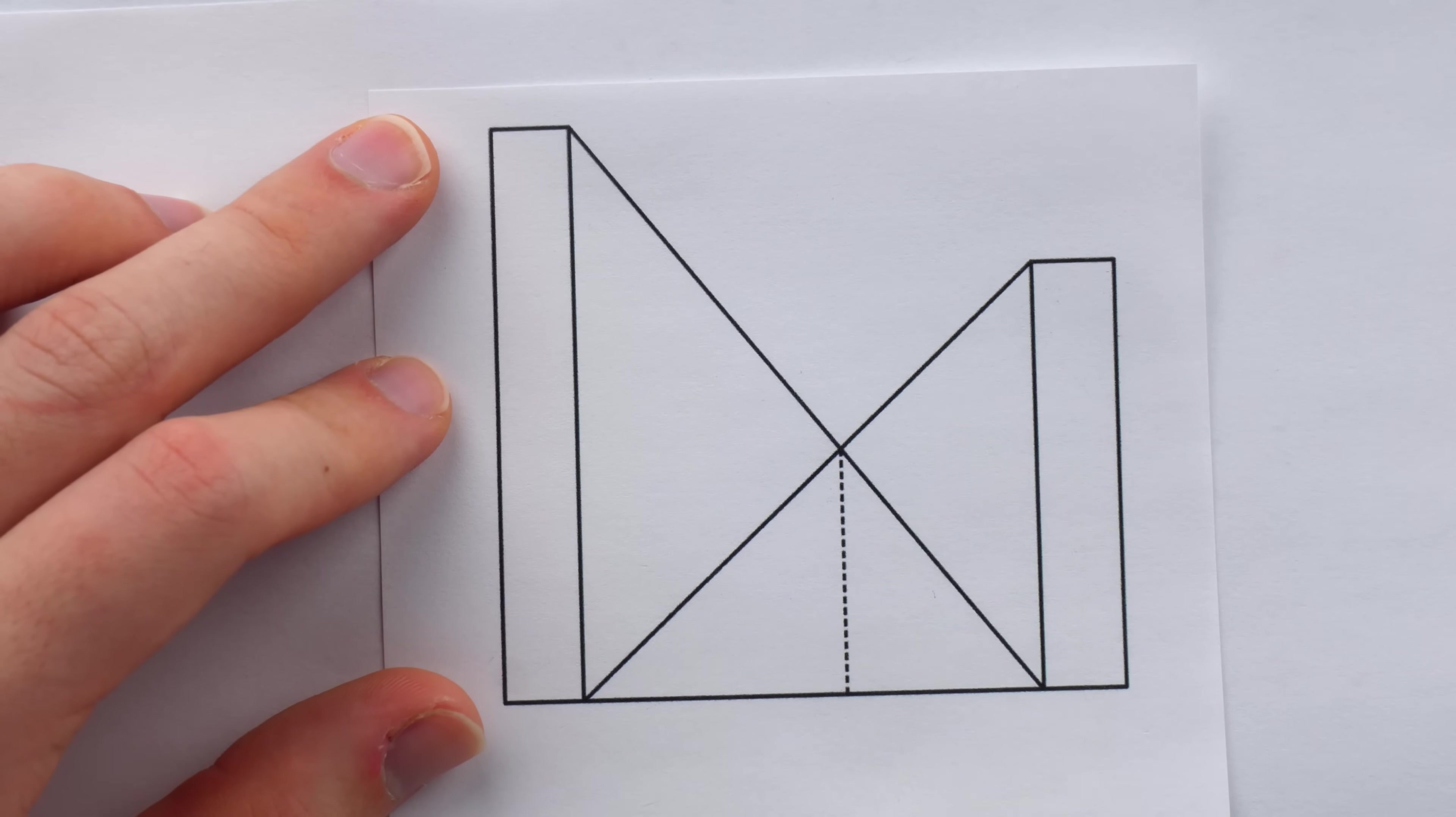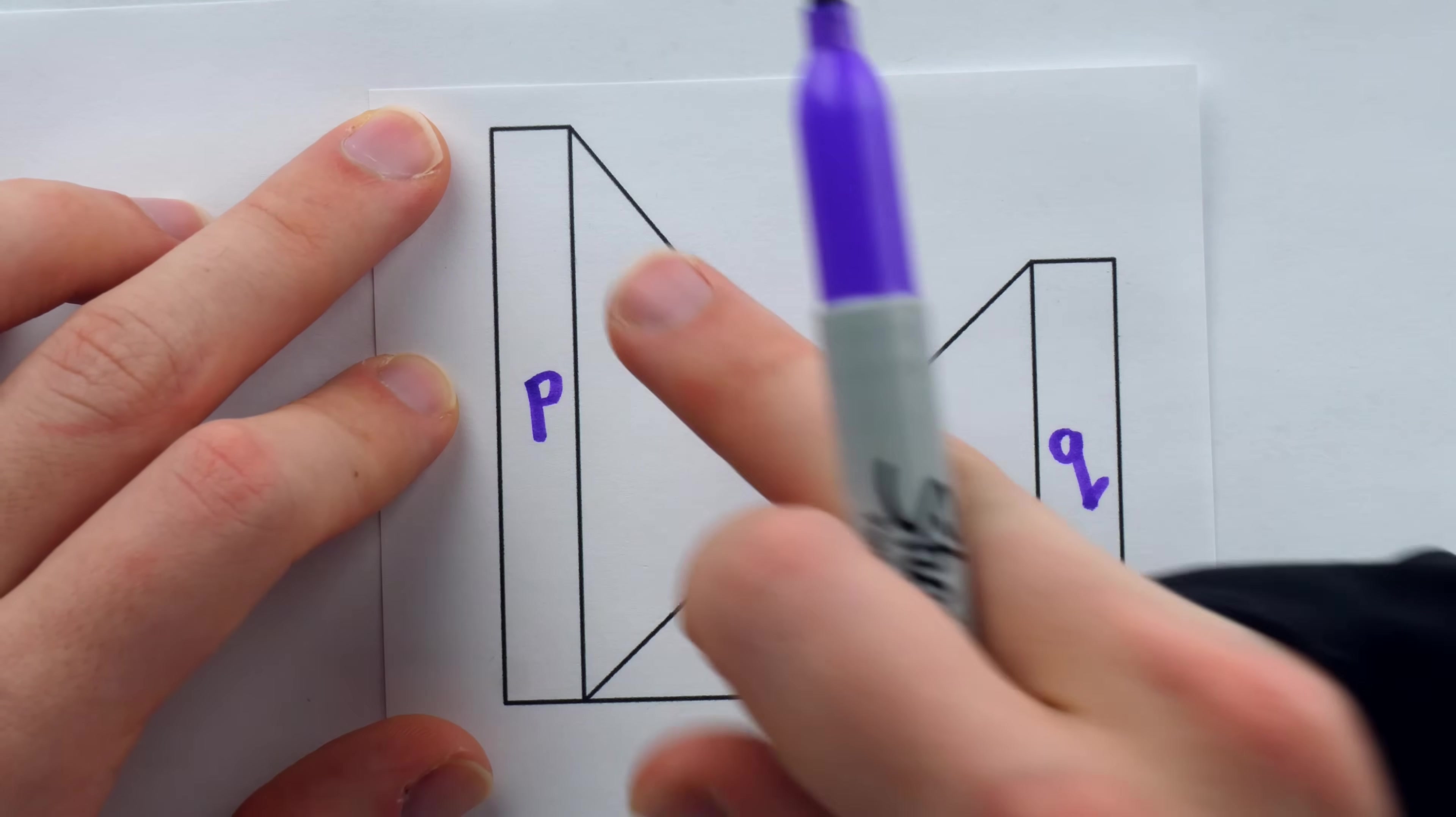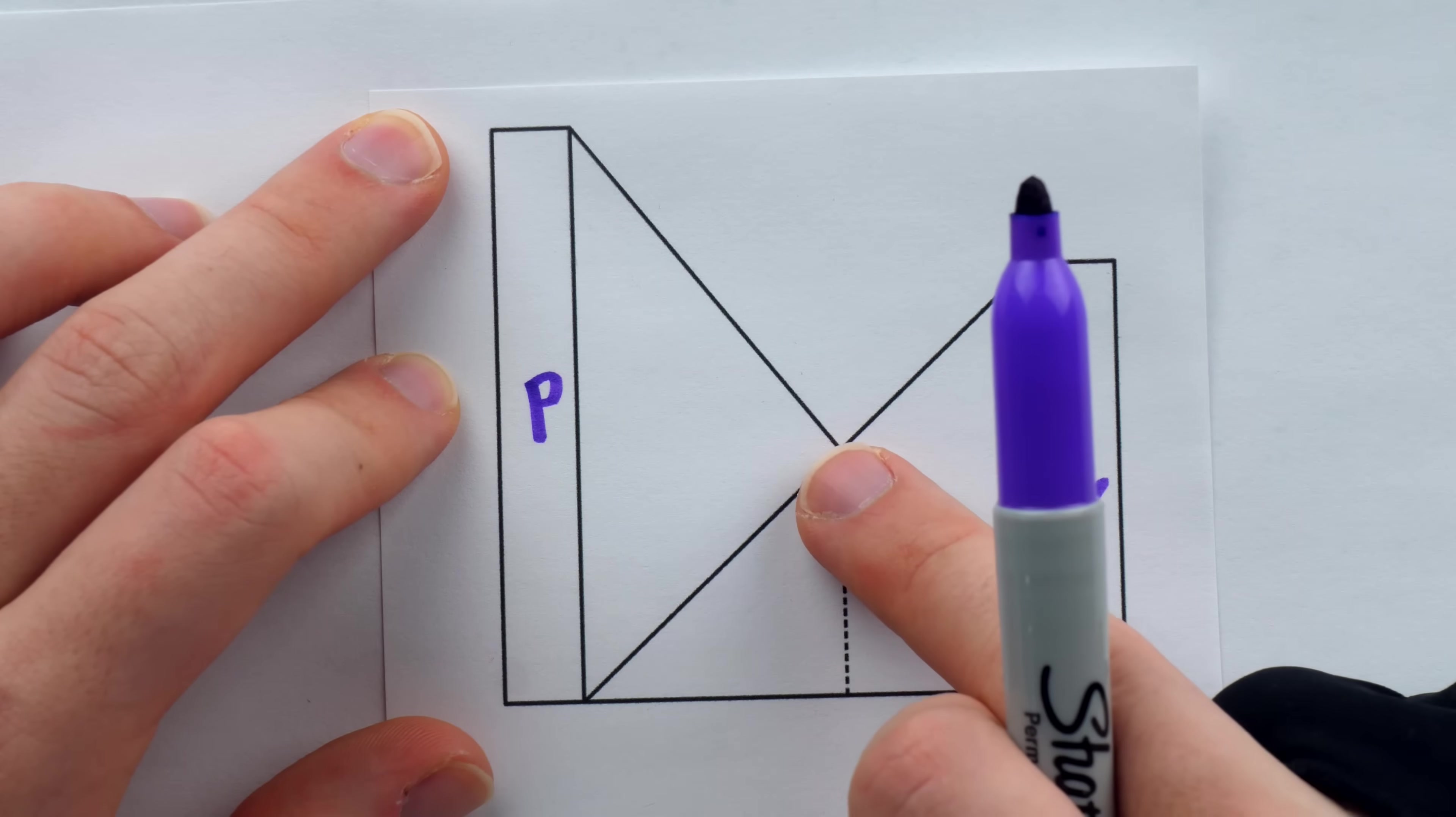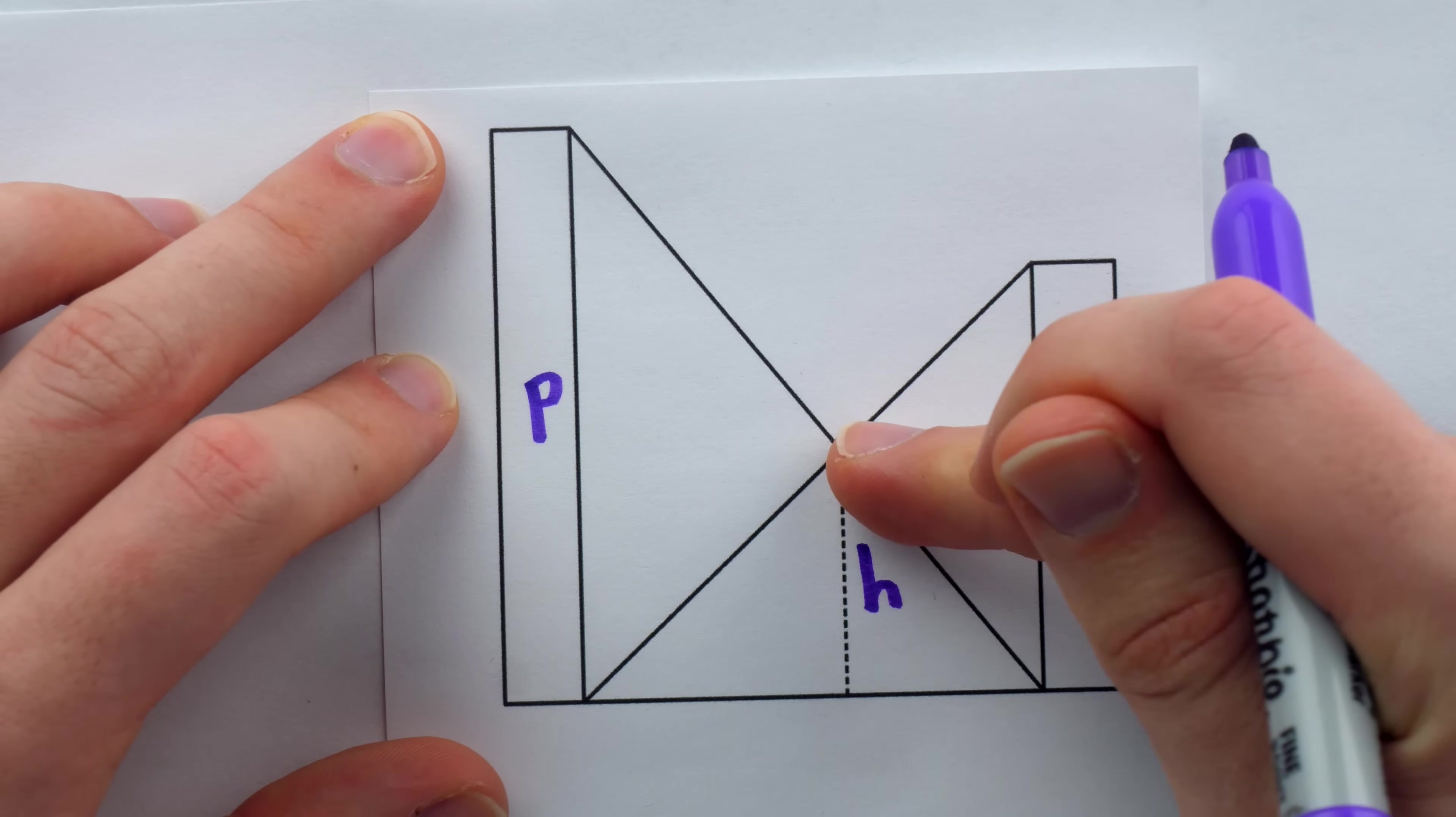The details of the problem are this. There are two pillars whose heights are known. Let's call their heights P and Q. Two strings are then tied to the tops of the pillars and stretched out and attached to the bases of the opposite pillars. Where the strings meet, another string is suspended and drops vertically until it reaches the ground. And the question is to find the height, which we will call H, of this final string.